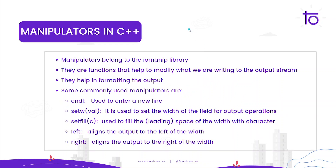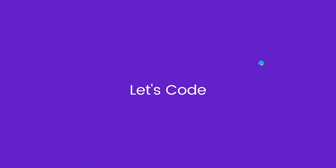Manipulators belong to the iomanip library. They are functions that help to modify what we are writing to the output stream — in a sense, they help us format our output. Some commonly used manipulators are endl, which enters a new line; setw, which sets the width of the field for output operations; setfill, which fills the leading space of that width with a certain character; and left and right, which align the output to the left or right of the width. Now let's see all of this in action in code.